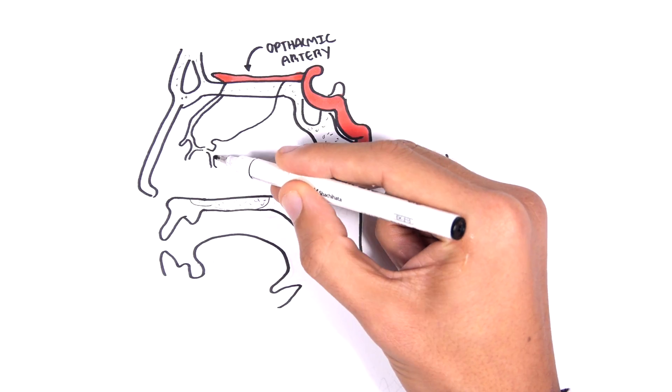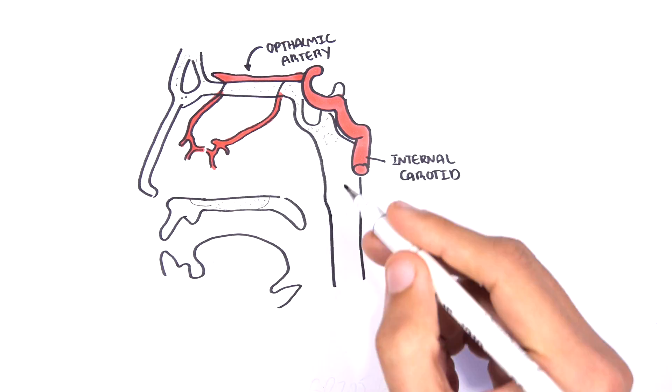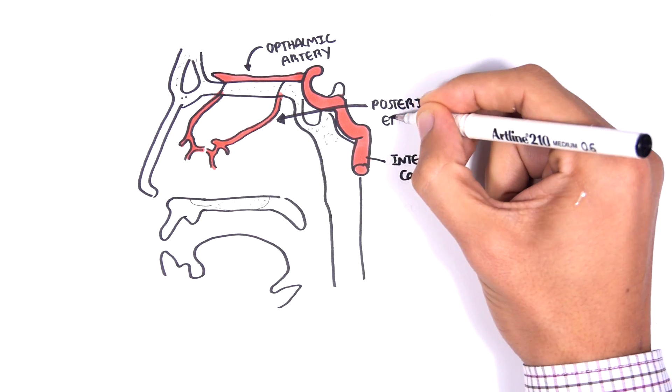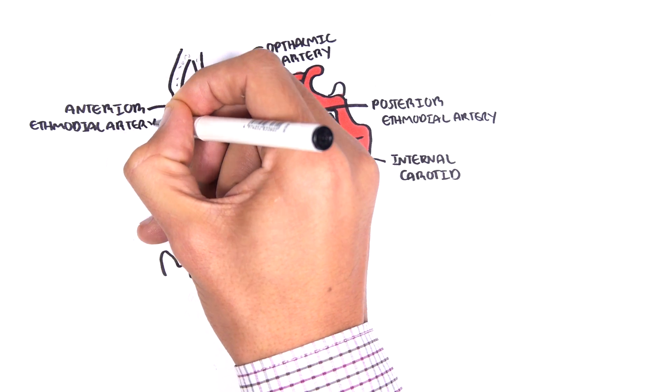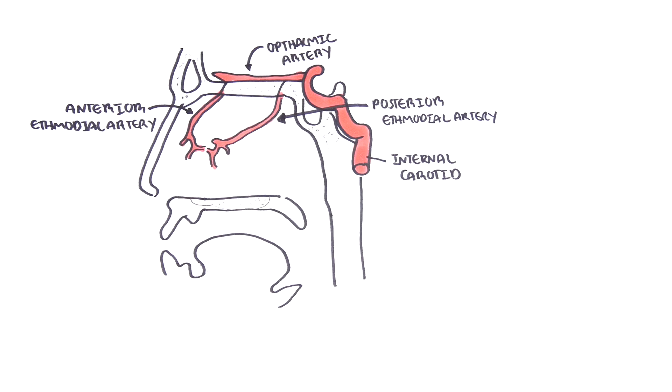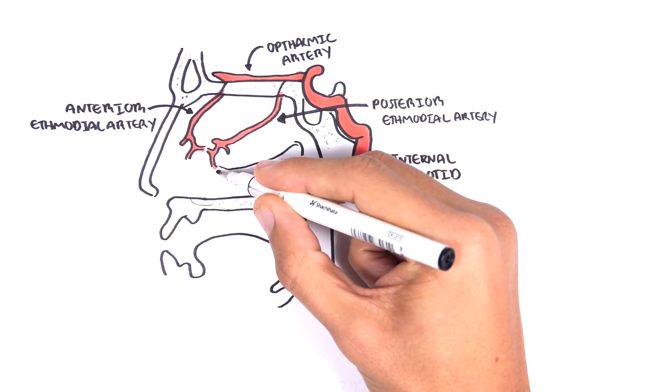Firstly, it has a branch called the posterior ethmoidal artery and then the anterior ethmoidal artery. The anterior and posterior ethmoidal arteries meet at a section within the nasal cavity and supply blood to this area.